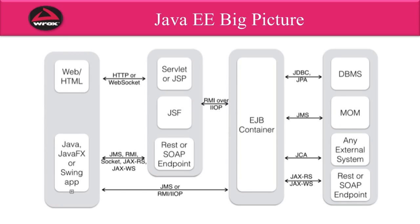Let's take a look at the big picture as far as building different types of applications. On the far left here, we have our user interface or our clients. You can build a web front end, or at the bottom, you can have a Java Swing GUI front end. It can communicate across the network to your middleware — components that will actually run on the back-end server. You can make use of servlets or JSPs, Java Server Faces or JSF, or RESTful or SOAP endpoints. I'll cover those in the following slides.